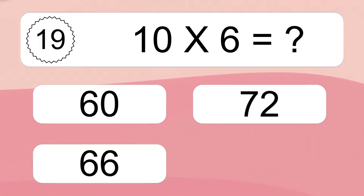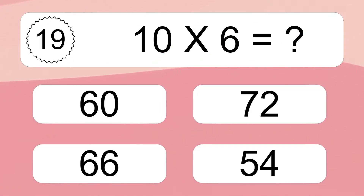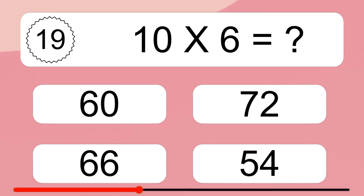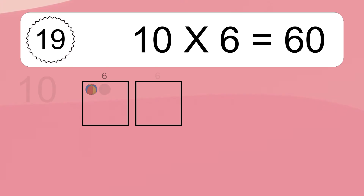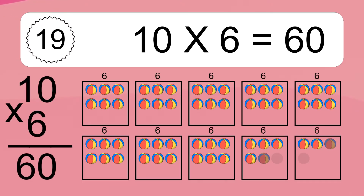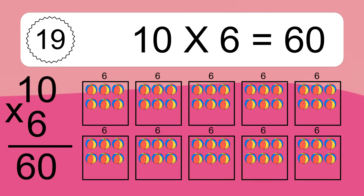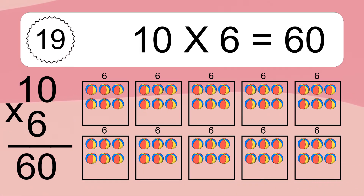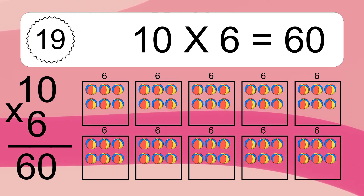10 times 6 equals 60. We have 10 boxes and each box has 6 colorful balls inside. If you count all the balls in all the boxes together, you will have 10 times 6 balls. This equals 60 balls.